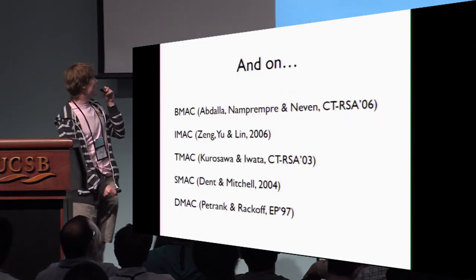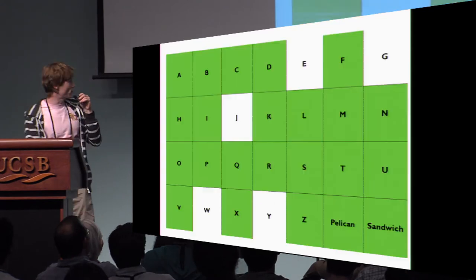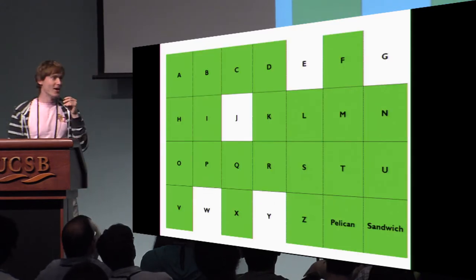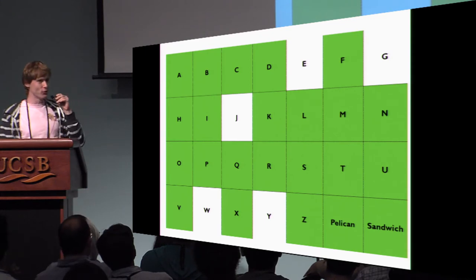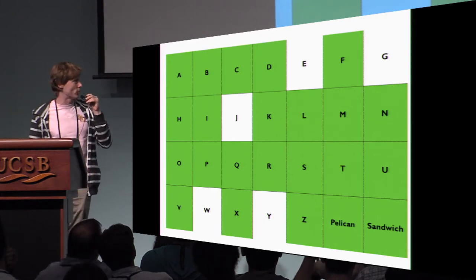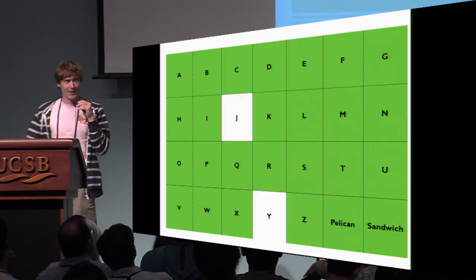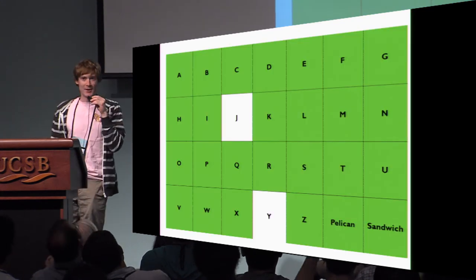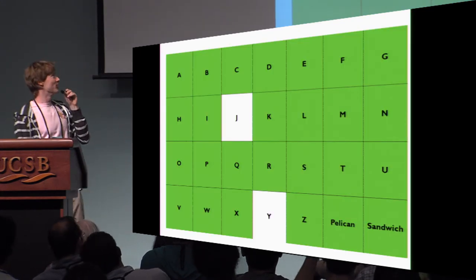And then we have BMAC, IMAC, TMAC, SMAC, DMAC. It's not quite over — we have this. So now only a handful of letters are still remaining, but not for long because then we have WMAC, EMAC, GMAC. And here we are — only two letters left.